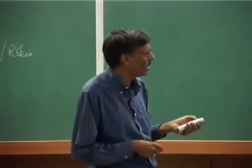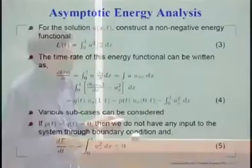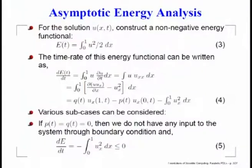Since ∂u/∂t = u_xx from the governing equation, we can write and do some manipulation — we get a perfect differential in the first part minus u_x². Integrating, we get u·u_x evaluated at x = 1 minus u·u_x at x = 0, and the last term is simply −∫u_x² dx.